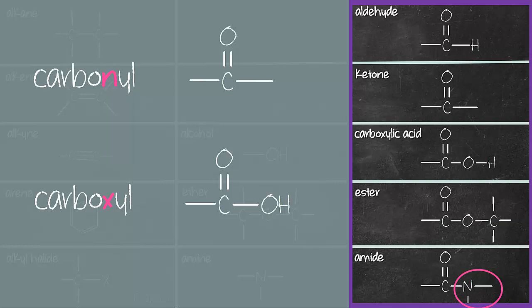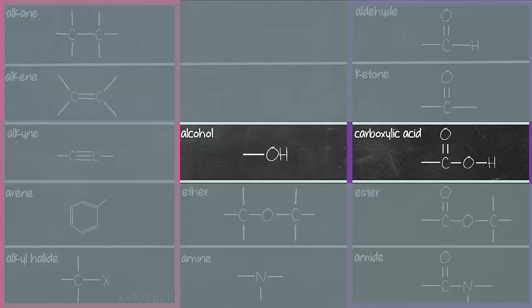Okay, next we move on to the next grouping. Alcohol and carboxylic acid. They both have something in common which is the OH group. By the way, OH group has its own name, it's called hydroxyl group. So if you look at the difference between alcohol and carboxylic acid, they both have OH. The only difference is carboxylic acid has an extra C double bond O.